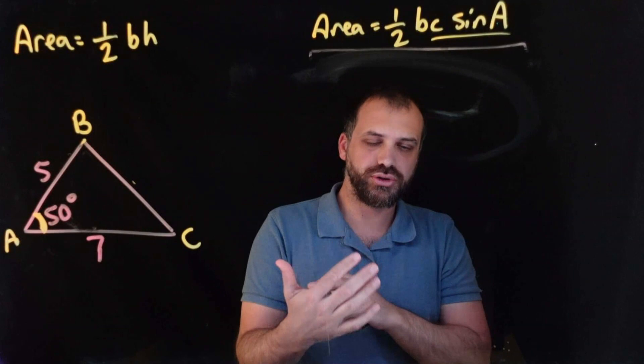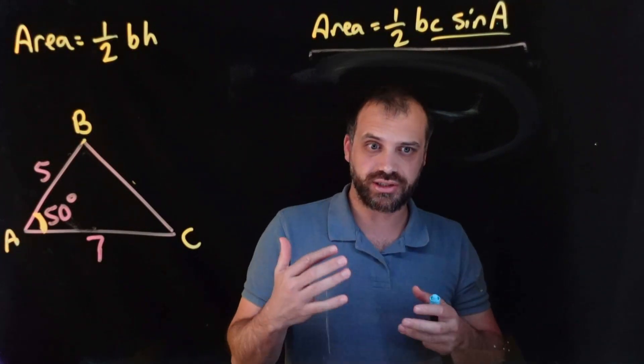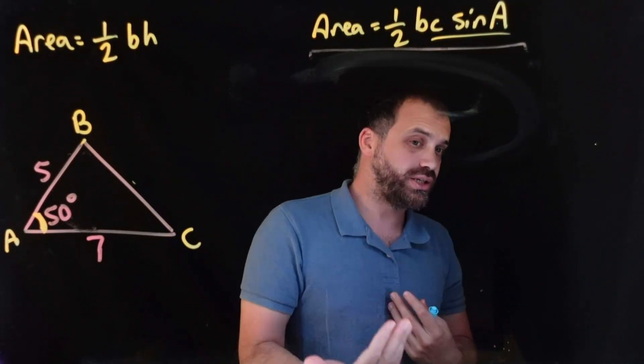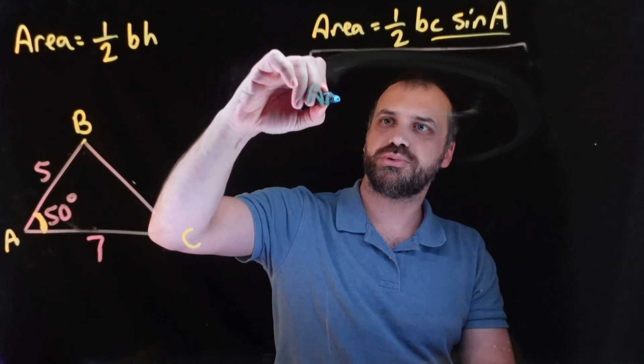If you don't have two sides and an included angle, you've got to do some mucking around to find two sides and an included angle so that you can then do it. You might need to find an extra side, you might need to find another extra angle, something like that. Alright, but as it stands, this one, super straightforward,